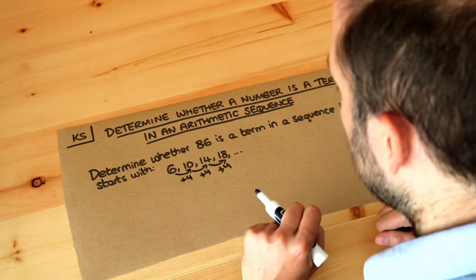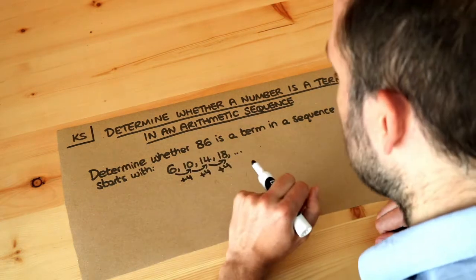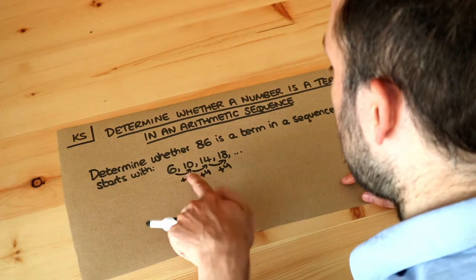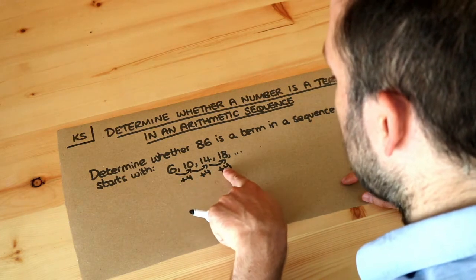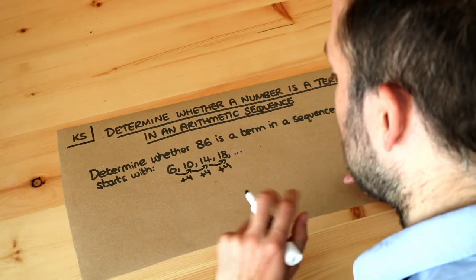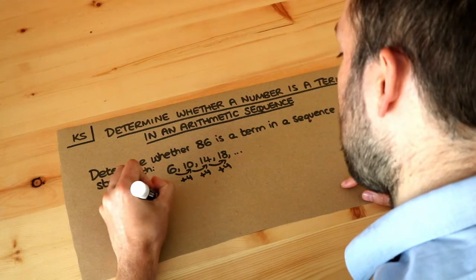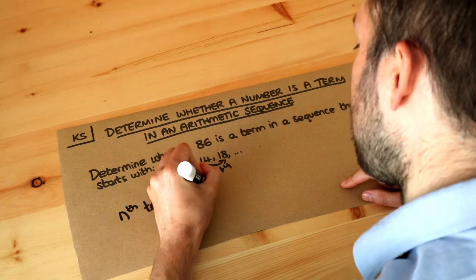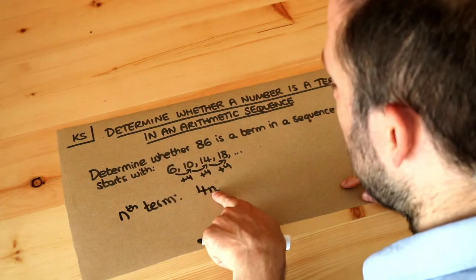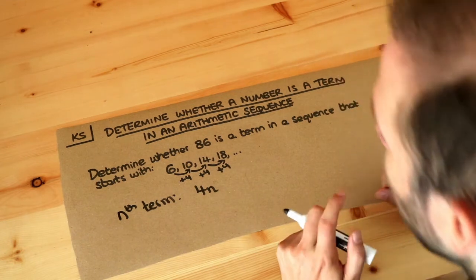Now we did that in a previous video and if you don't know how to do that then please watch that video first, but what we do is we look at what the difference between the terms is, which is four as we discovered, and that means the nth term formula starts with 4n. Remember the difference is four, you just whack that four in front of an n.